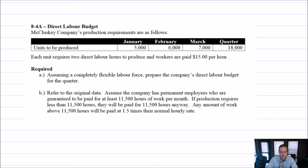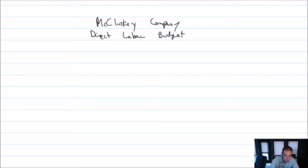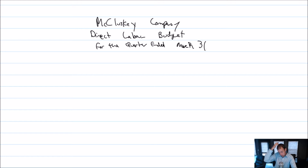Let's get to it. The name of the company is McCluskey Company, and we are preparing a direct labor budget for the quarter ended March 31st. And of course that quarter is January, February, March.